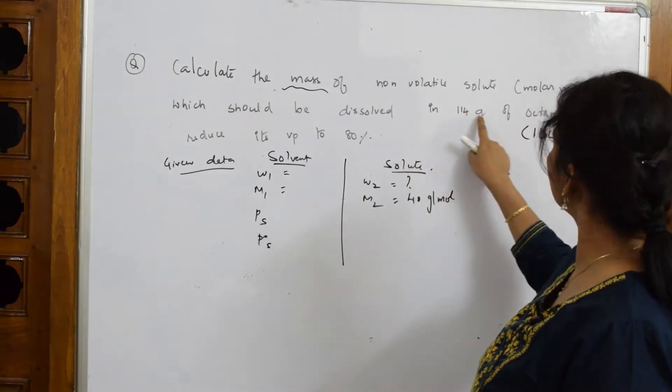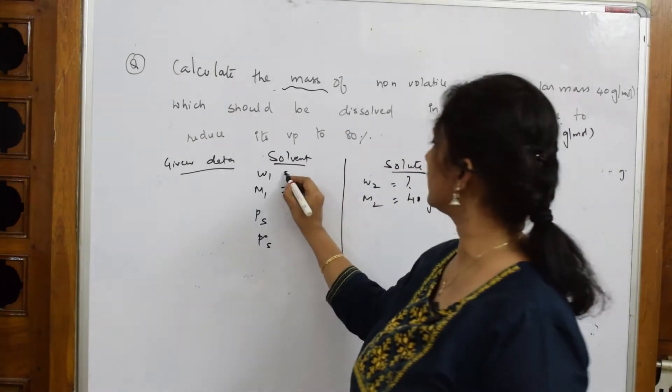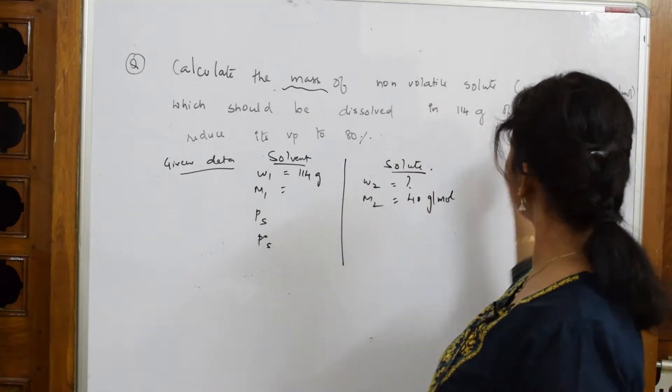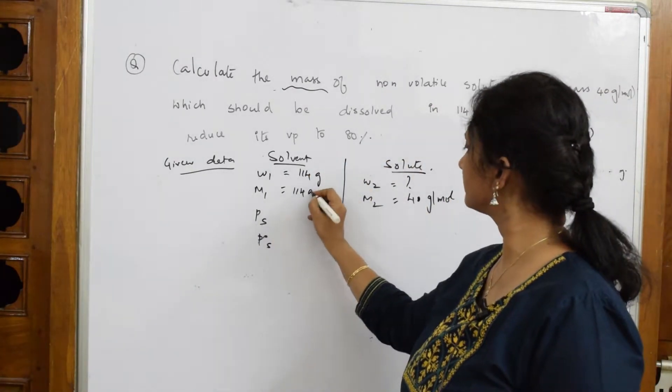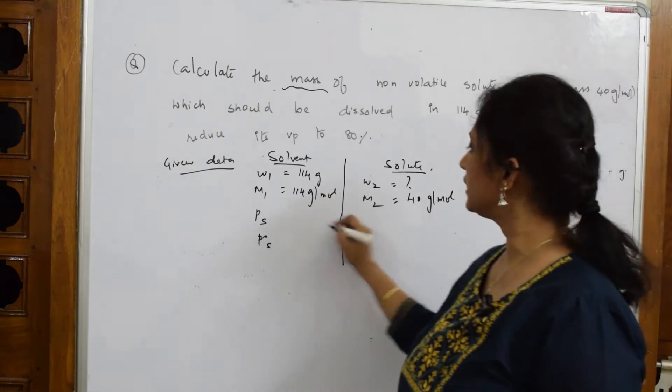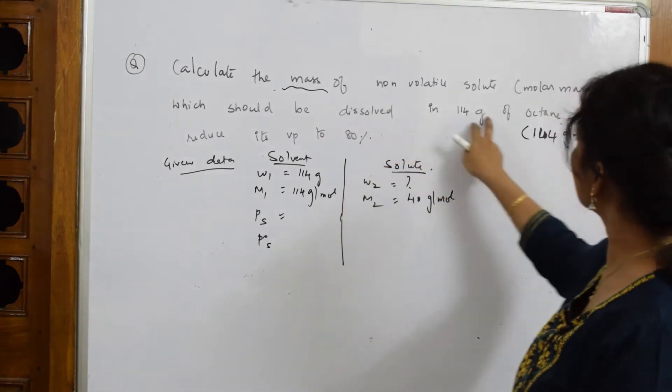It should be dissolved in 114 grams of octane. The molar mass of octane is also given as 114.